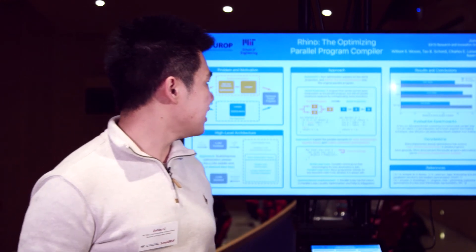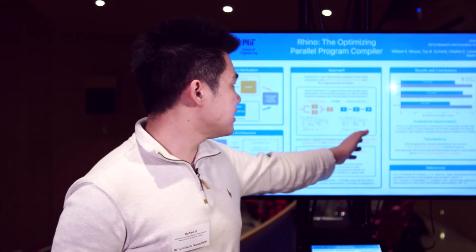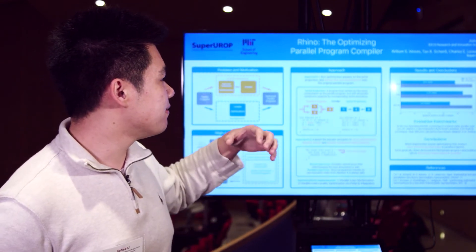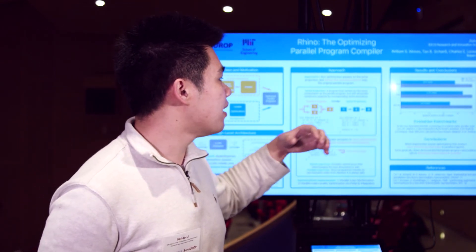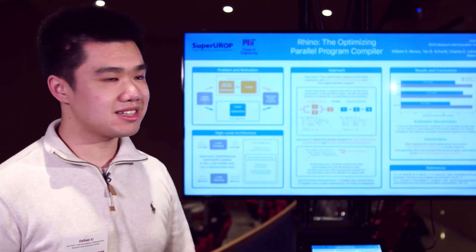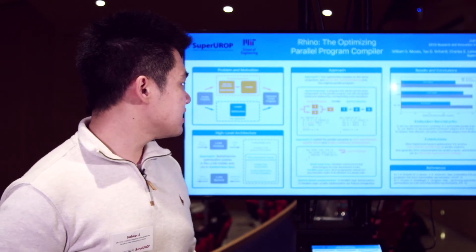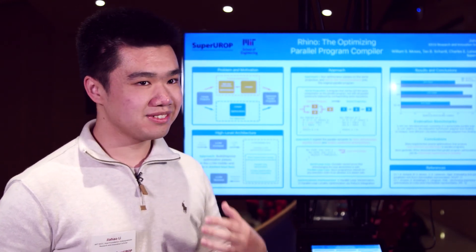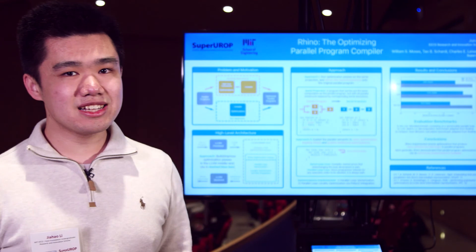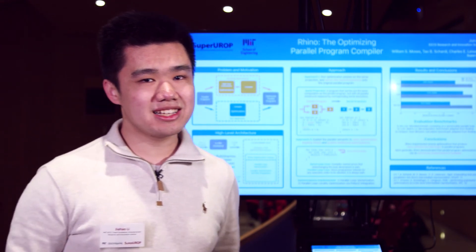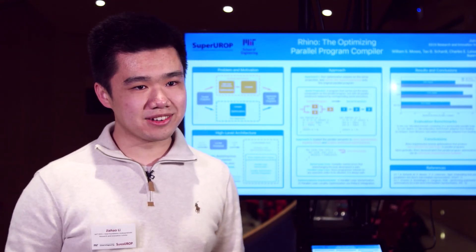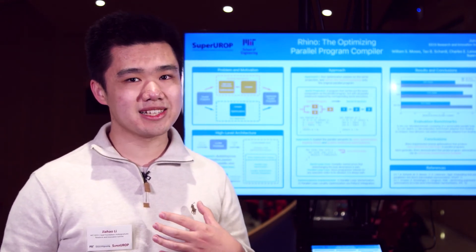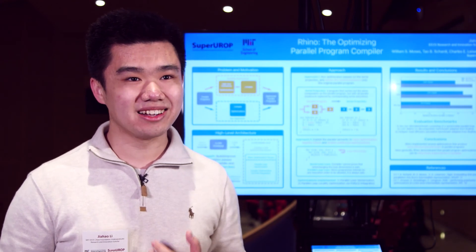In the evaluation that we have run, we have been able to observe a speedup of up to 31% on certain benchmarks. This means the program would take 31% less time to run. So I think with this we have demonstrated that it is indeed possible and feasible to effectively implement optimization for parallel programs in a compiler.